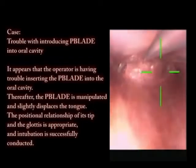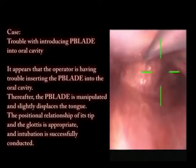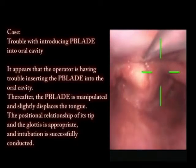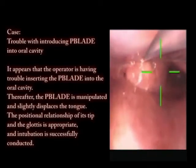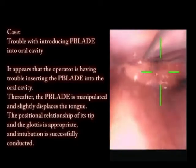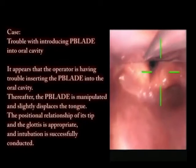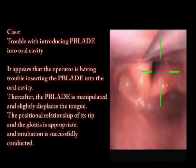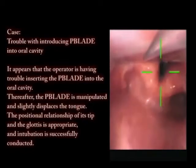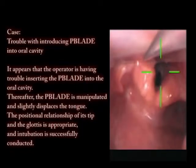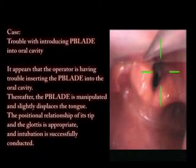Thereafter, the P-blade is manipulated and slightly displaces the tongue. The positional relationship of its tip and the glottis is appropriate, and intubation is successfully conducted.